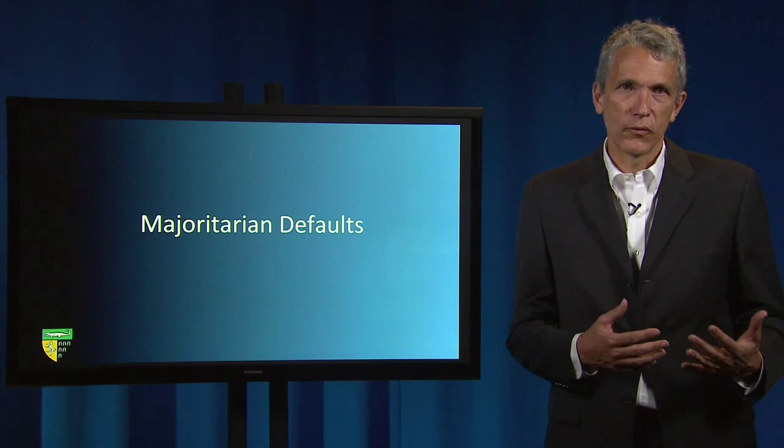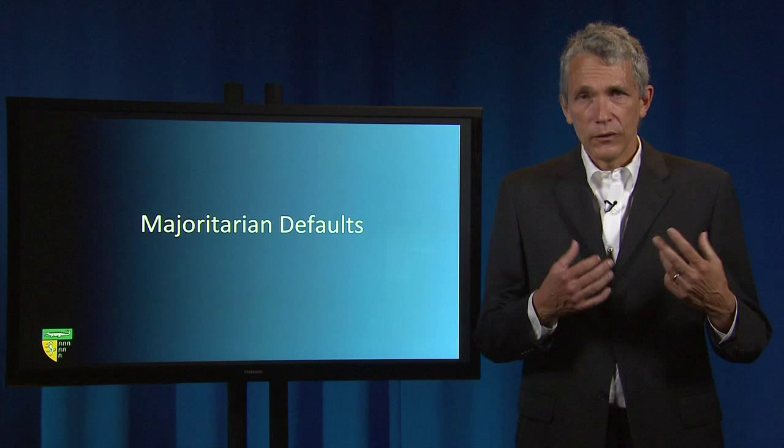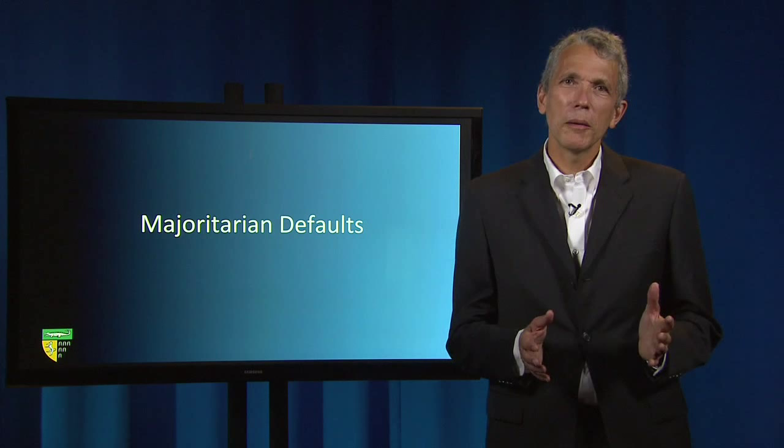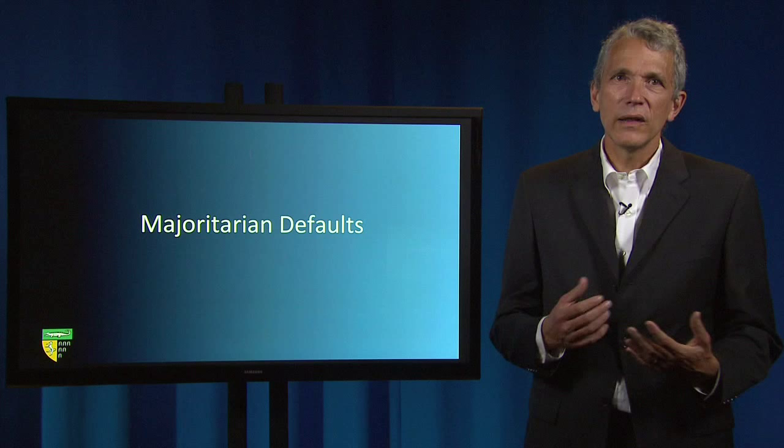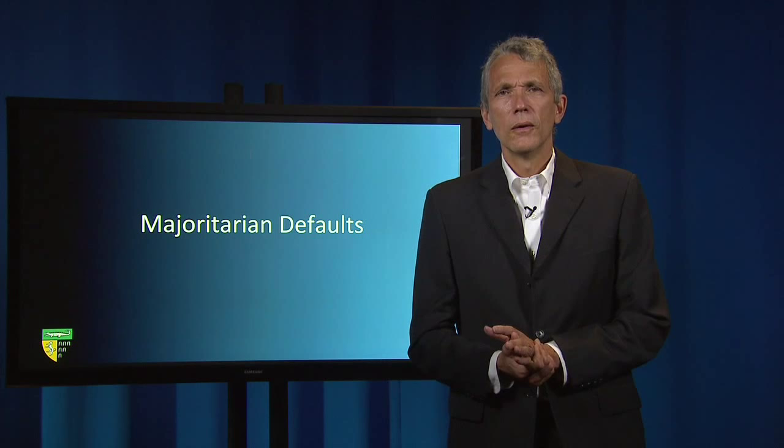For example, in sale of goods contracts covered by the Uniform Commercial Code, if the parties fail to name a price, the UCC fills the gap with a reasonable price default. Most parties in these kinds of contracts probably contract for a reasonable price — who wants an unreasonable price? — which is normally going to be cashed out as closely related to the market price. Indeed, anytime you see the word "reasonable" included in the description of a default, there's a good chance that hypothetical or majoritarian gap-filling is at work.